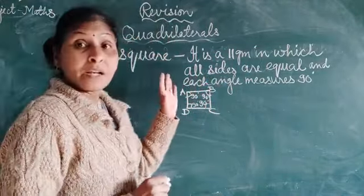Next is trapezium. It is a quadrilateral in which one pair of opposite sides is parallel. In a trapezium, only one pair of sides is parallel and the other pair is not parallel. In trapezium ABCD, AB is parallel to DC, but AD is not parallel to BC. Only one pair of sides is parallel — that is why the definition of a trapezium is: a quadrilateral in which one pair of opposite sides is parallel.